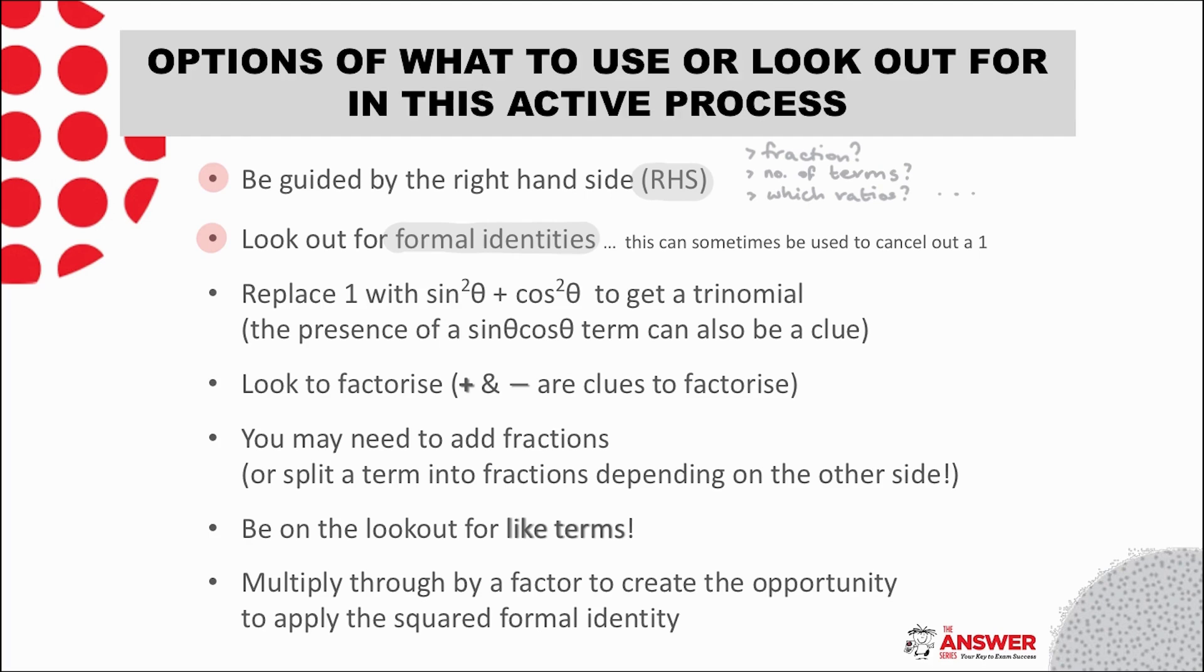Remember all the different ways the squared identity can show up, and also that applying the squared identity is often used to cancel out a one. Remember also that a one can be replaced with sin²θ + cos²θ, often to create a trinomial. The presence of a sinθ cosθ term can be a clue for this option.